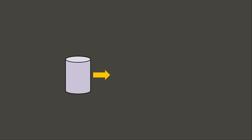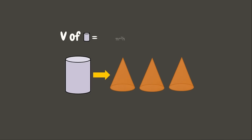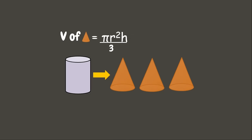From the experiment, we learned that one cylinder is equal to three cones, considering that they have the same height and base. Therefore, we can say that the volume of the cone is one-third of the volume of the cylinder. So the formula for the cone's volume is one-third times πr²h, or πr²h divided by 3.